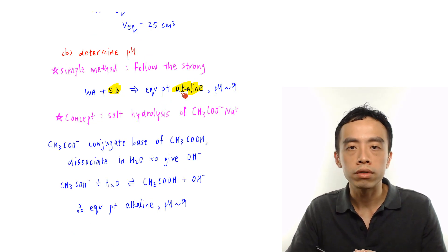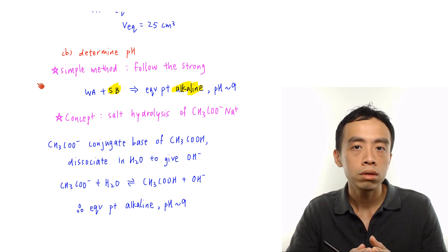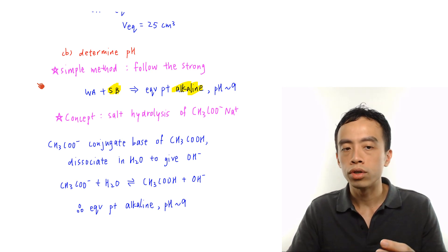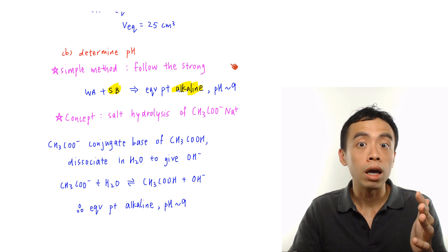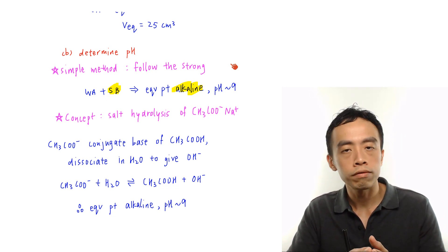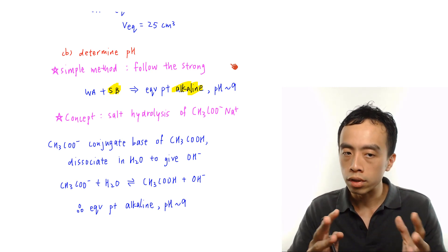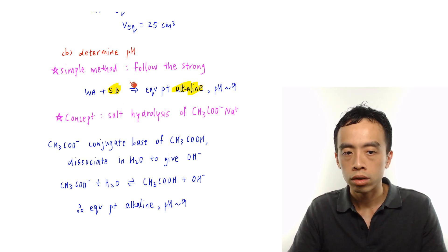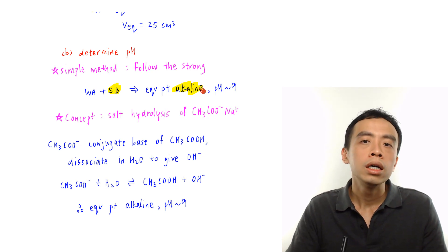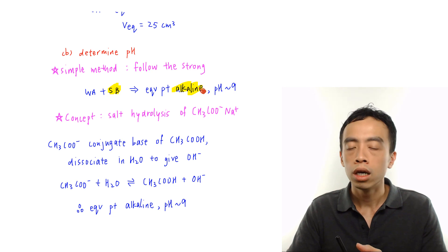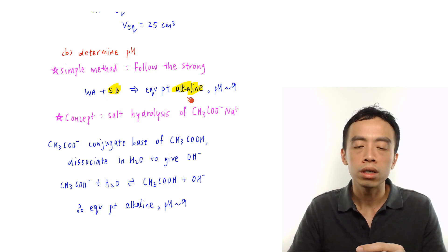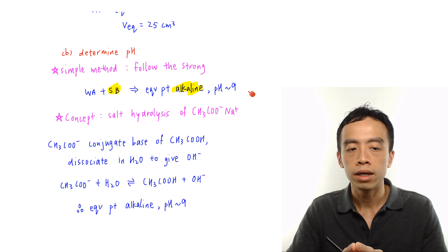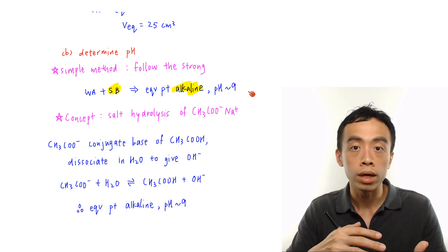Now the next part is to determine the pH of the equivalence point. The simpler method is to just follow the strong species in the reaction. Since this is a weak acid strong base reaction, the equivalence point will follow the strong base, so it will be alkaline. If it is alkaline, we estimate it to be roughly 2 units above pH 7, so roughly pH equals to 9.